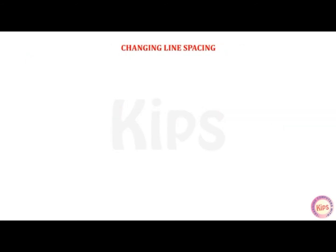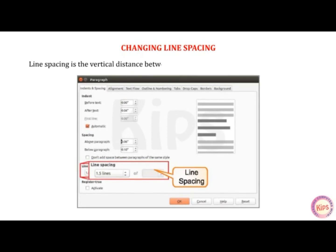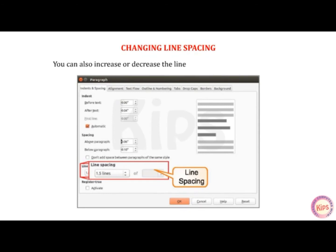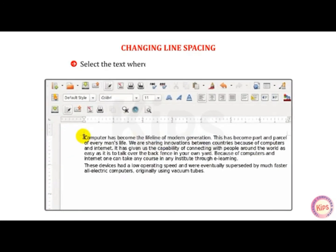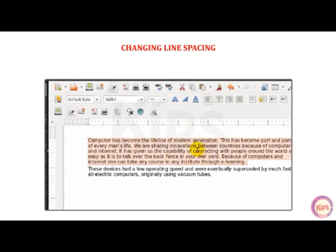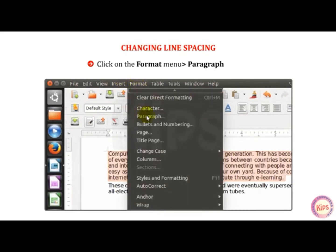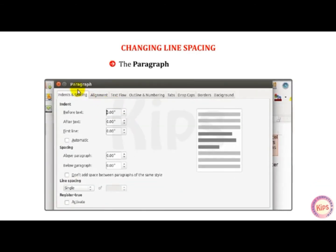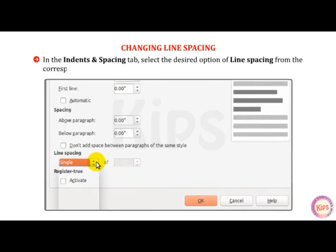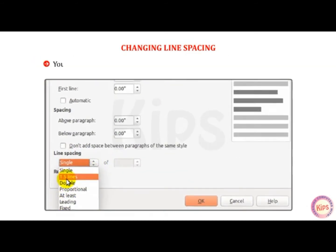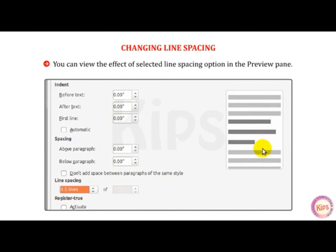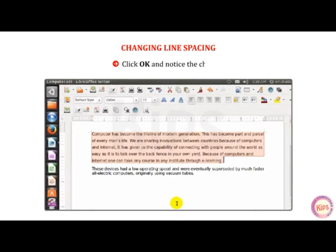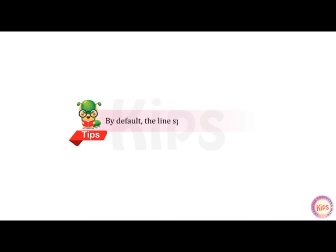Let us learn how to change line spacing. Line spacing is the vertical distance between successive lines of text in a document. You can increase or decrease the line spacing within a paragraph. Select the text where you want to change the line spacing. Click on the Format menu, then go to Paragraph option. The Paragraph dialog box opens. In the Indents and Spacing tab, select the desired option of line spacing from the drop-down list. You can view the effect in the Preview pane. Click OK and notice the change. By default, the line spacing is set to single.